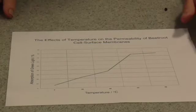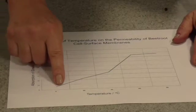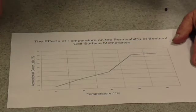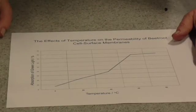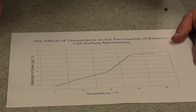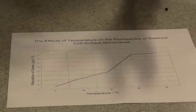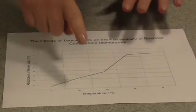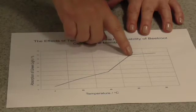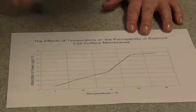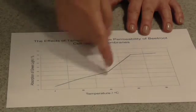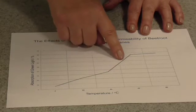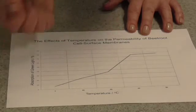Looking at the graph, at fairly low temperatures between about 0 and 40 degrees, as temperature increases we get a gradual increase in the amount of anthocyanin being released from the cells. This is probably because increasing temperature results in more kinetic energy, which means the phospholipids in the membrane start to move around more. The membrane generally becomes more fluid and more anthocyanin is able to just diffuse out. Above 40 degrees, there seems to be a more rapid increase in leakage, probably because the proteins in the membrane are now starting to become denatured and the membrane is actually starting to fall apart.